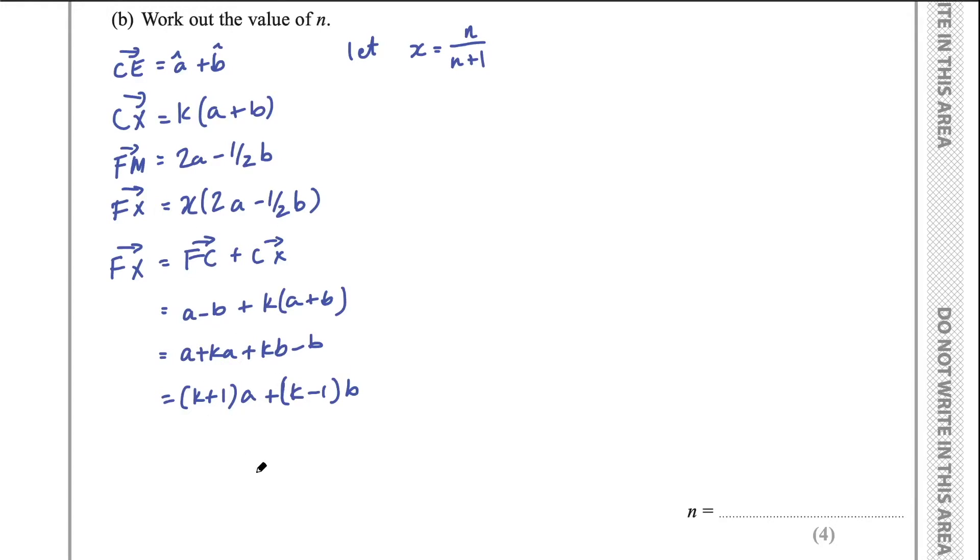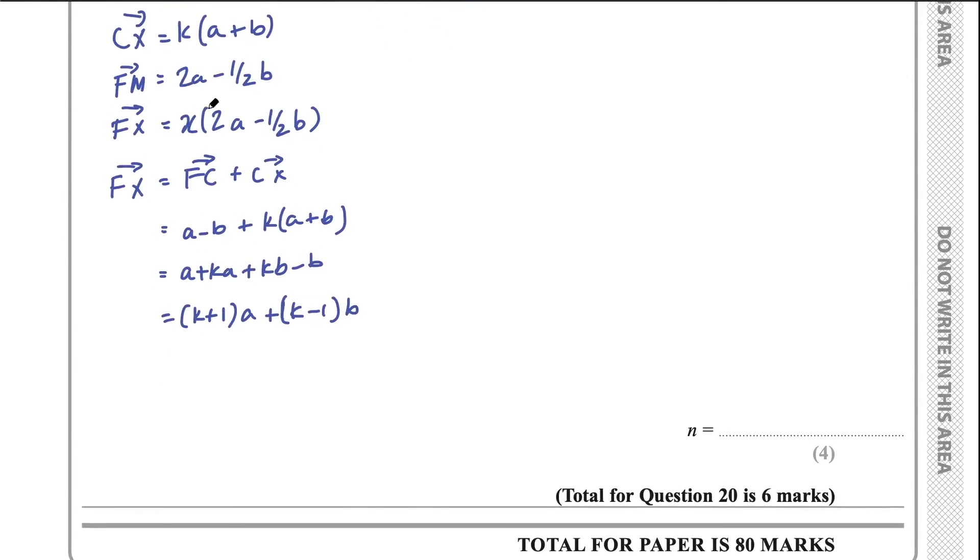Now, with the same vector, we can equate the coefficients, right? So we can say 2X times a, 2X times a equals this coefficient here, k plus 1. This is called equating coefficients. Very important step to understand when solving these types of vectors questions, and many other different types of questions as well. So if you're not sure about equating coefficients, maybe Google that, type that into YouTube and check out what that's all about.